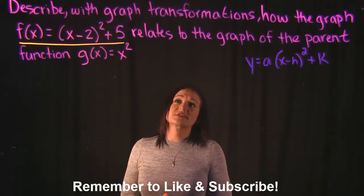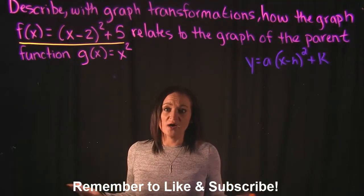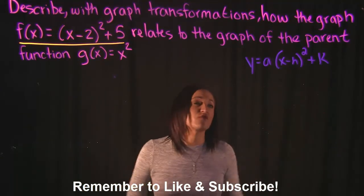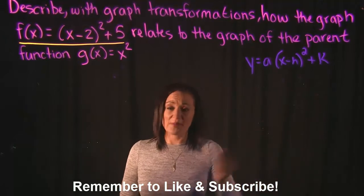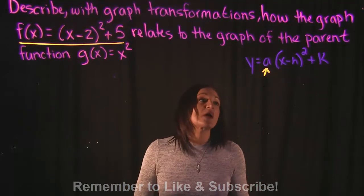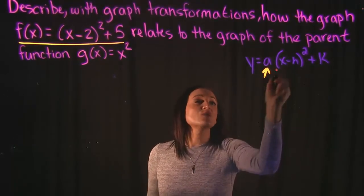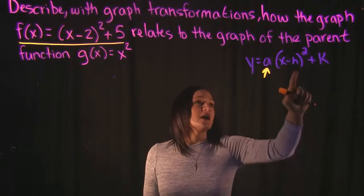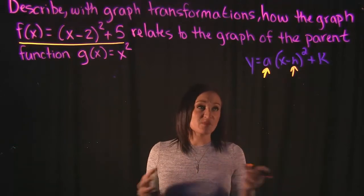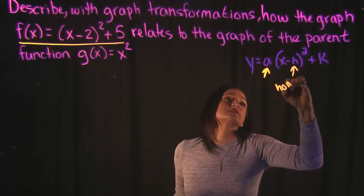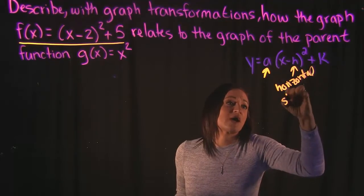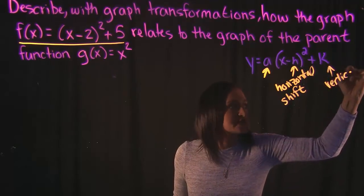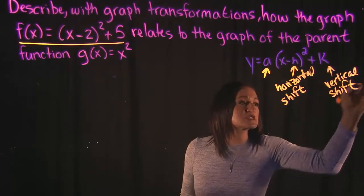In order to describe the difference, we need to be aware of some information about parabolas, specifically a parabola in standard form. Over here I have the equation for a parabola in standard form. The A represents a stretch in the graph — is it getting skinnier or fatter? H, the number inside the parentheses along with x, represents a horizontal shift, a movement left or right. And K represents a vertical shift — how it's moving up or down.